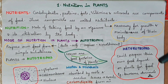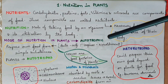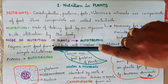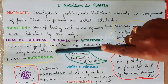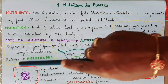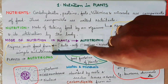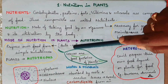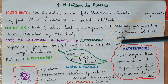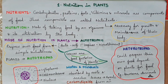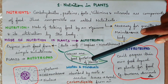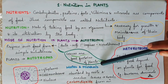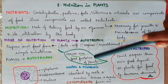Autotrophic mode of nutrition is how plants prepare food. The leaves are called the Food Factories of the Plant, because food is prepared in the leaves.